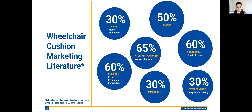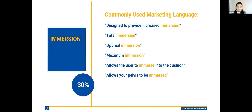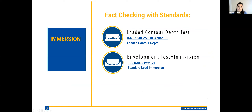Let's get started with immersion. We tend to see language such as 'designed for increased immersion,' 'total immersion,' 'optimal or maximum immersion,' 'it allows your pelvis to be immersed,' or 'the cushion allows the user to immerse into it.' We'll be showing you the icon, the test name, where it can be found in the standards, and the metric associated with the test that we feel is a good match to the marketing literature.